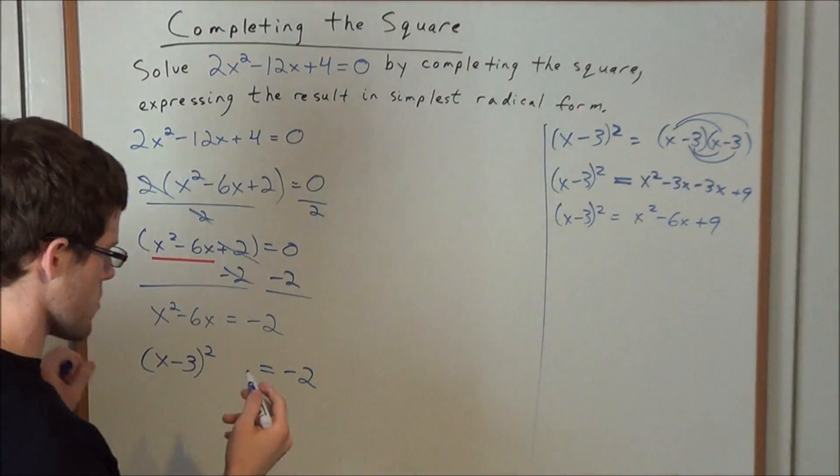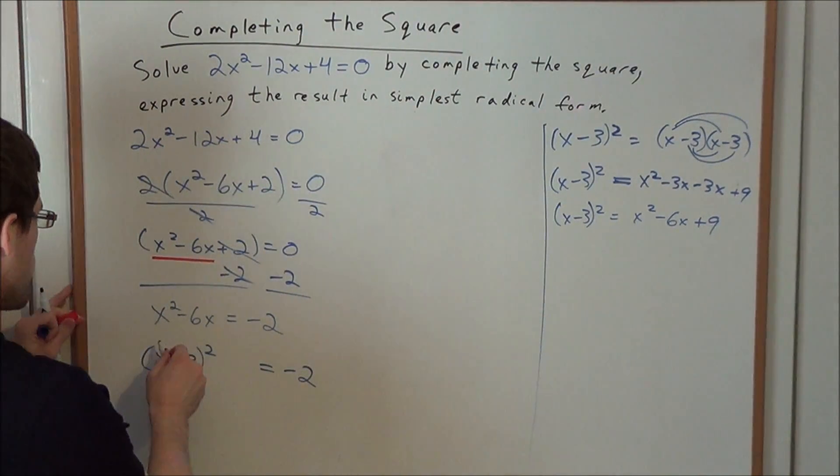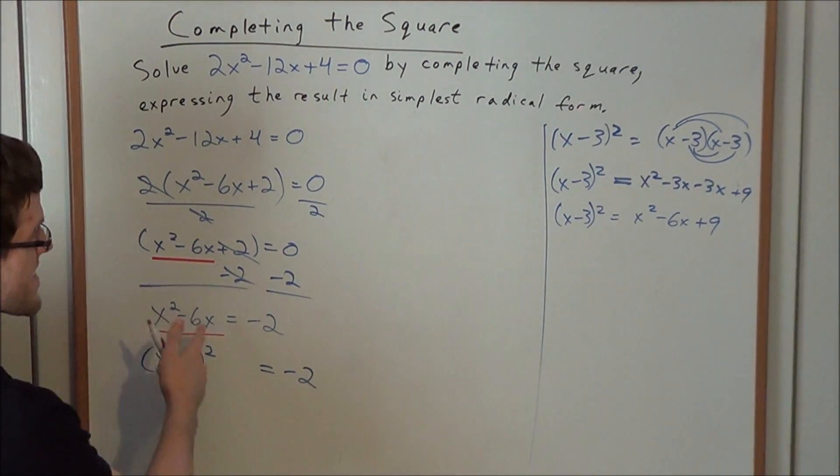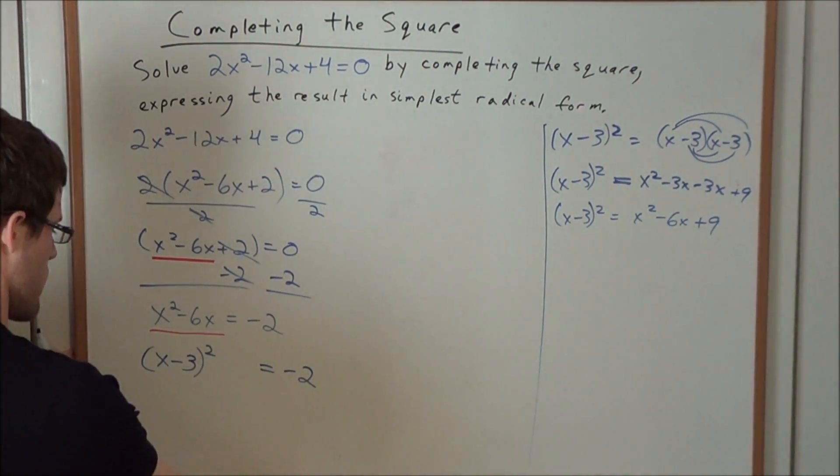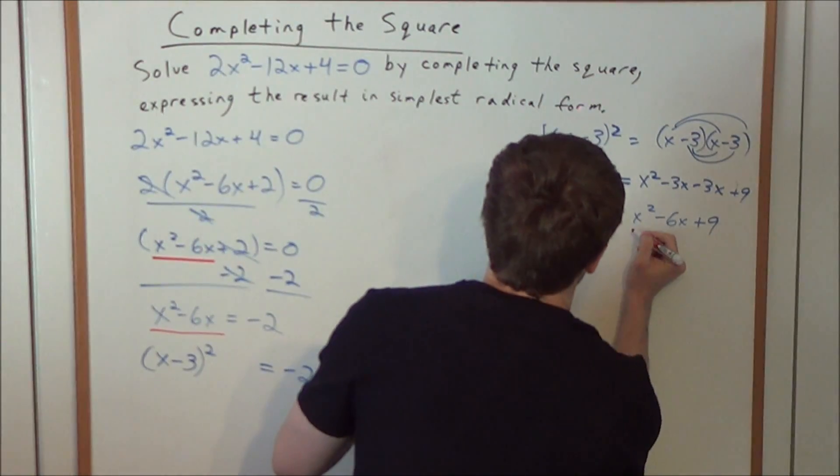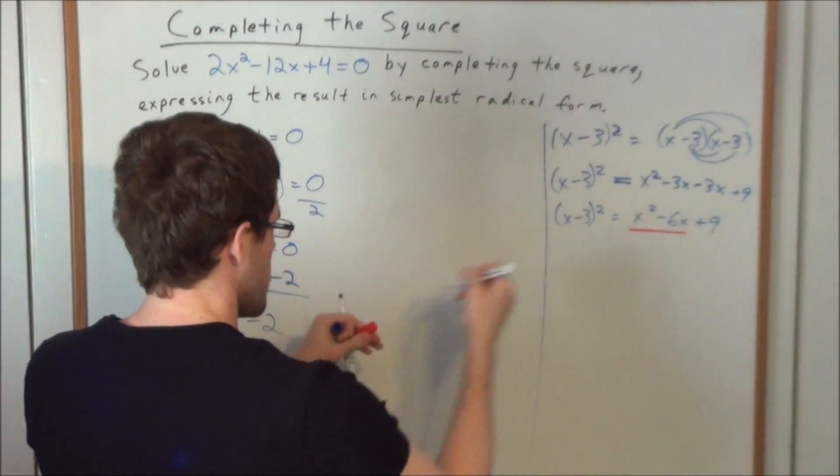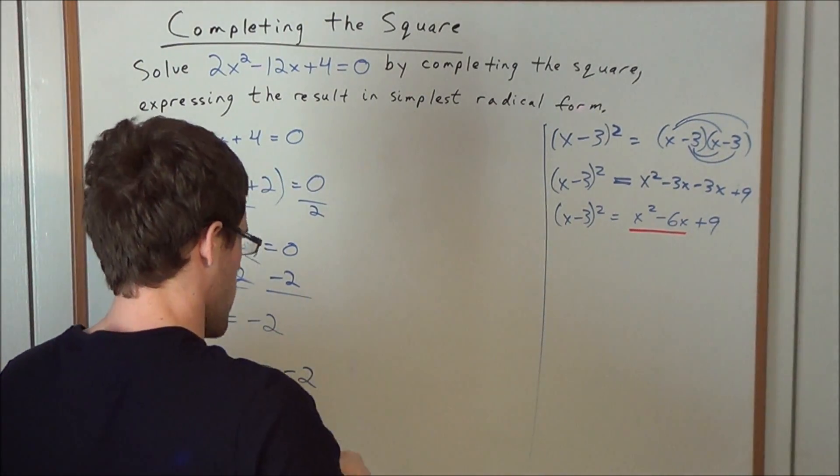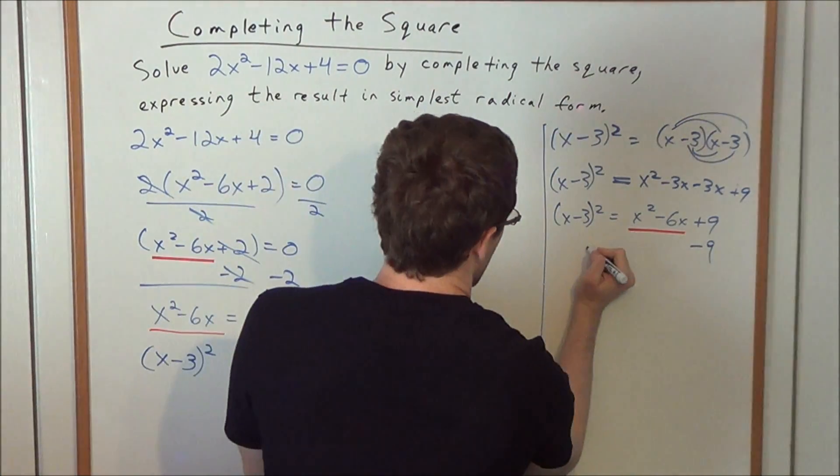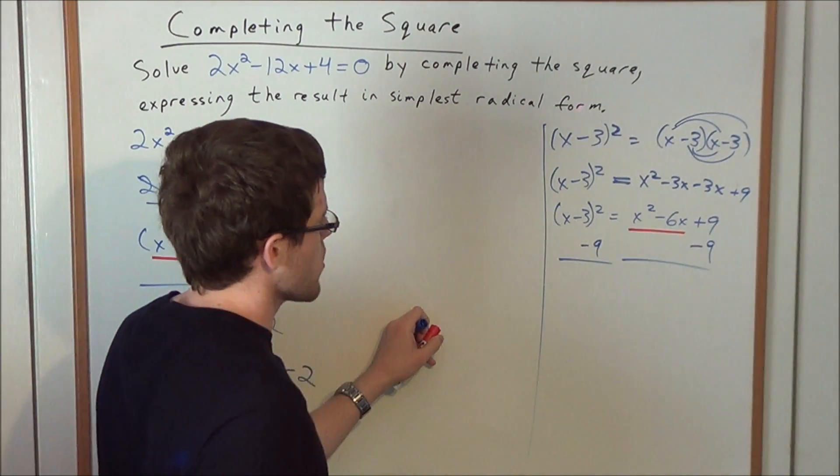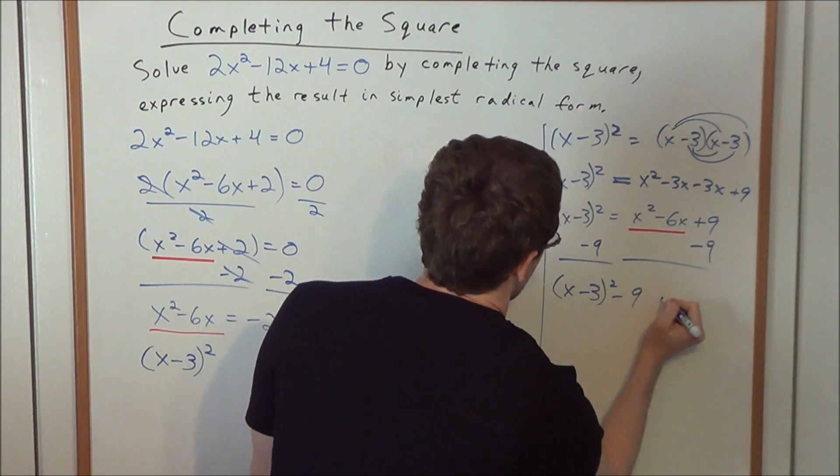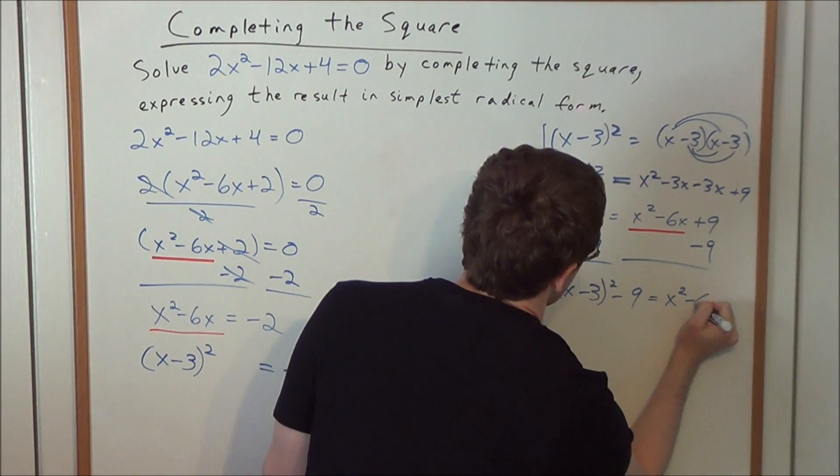But remember what we said before, our ultimate goal was to isolate this particular part of the equation. We need x² - 6x in perfect square form. So now in order to do that, we have our x² - 6x over here, but what we don't need is that extra +9. So what we could go ahead and do now is get rid of it by subtracting 9. When we subtract 9 from one side, we have to subtract 9 from the other side of the equation. And what this tells us is that (x - 3)² - 9 = x² - 6x.